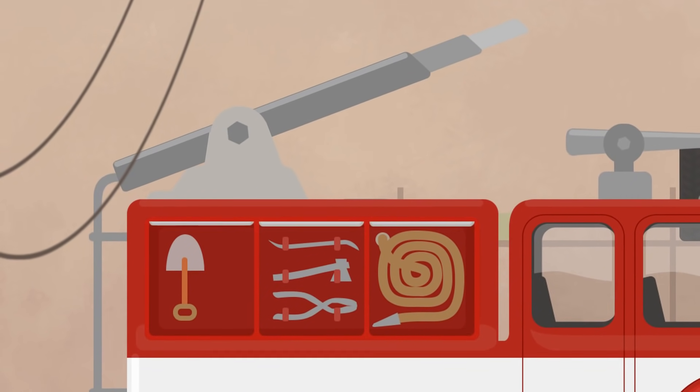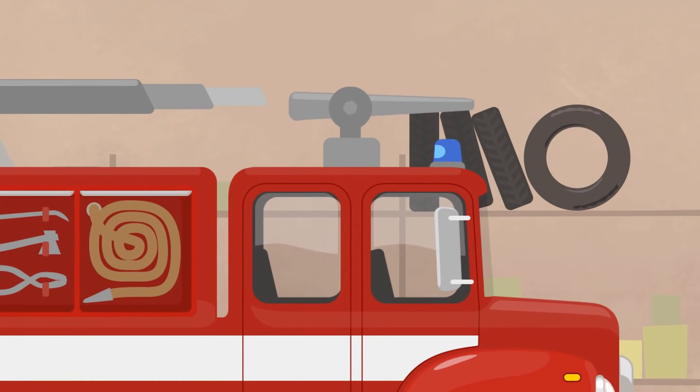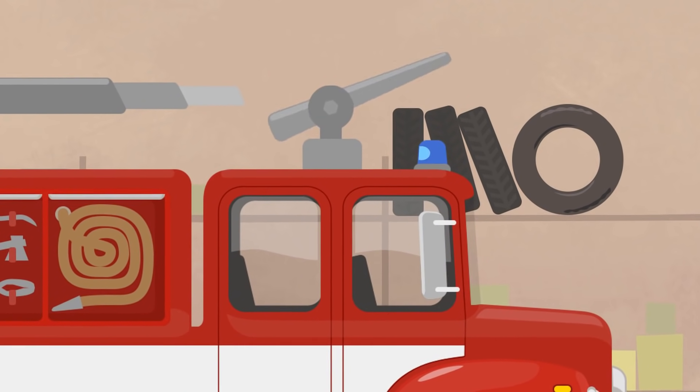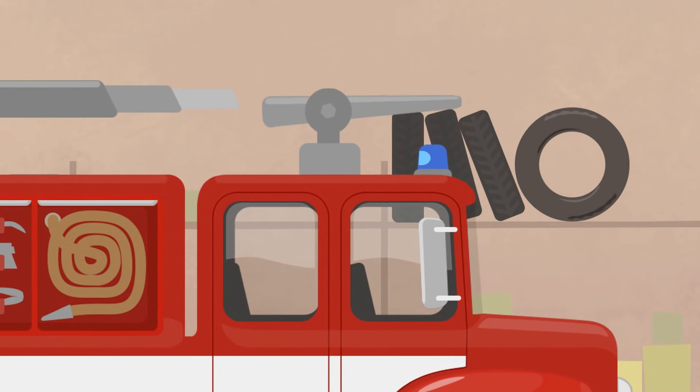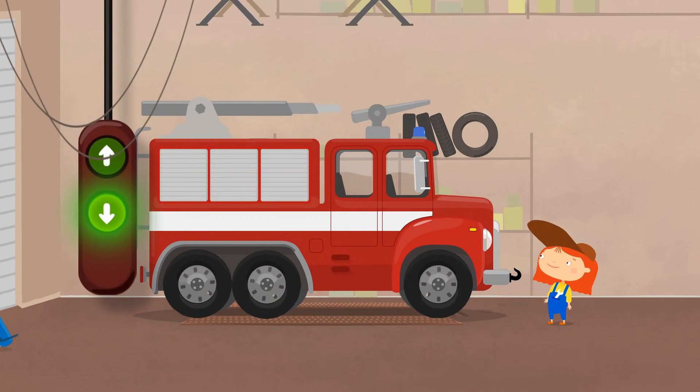There is a ladder at the top of the vehicle, so firemen can reach rooftops. This is the water cannon, which should shoot foam. The water cannon is fine.